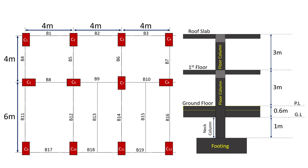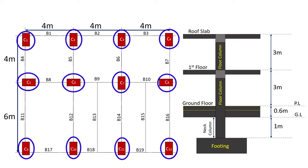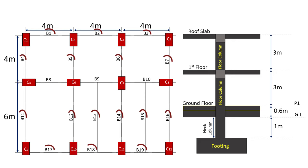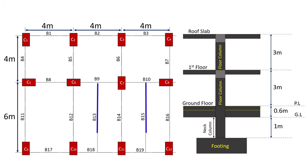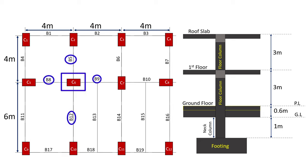Let's consider a 2-storey building with 12 columns numbered C1 to C12 and 19 beams from B1 to B19, out of which B13 and B15 are secondary beams. Let's calculate the approximate actual load on column 6, which is connected by beams B5, B9, B12, and B8.